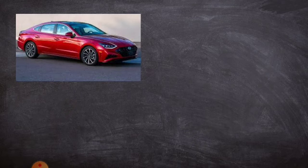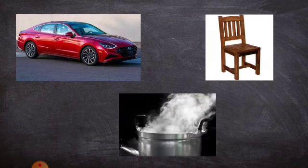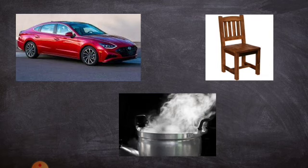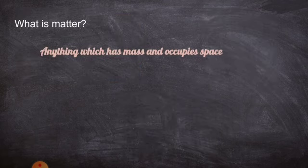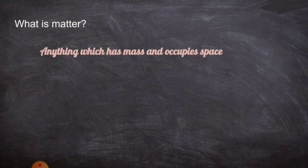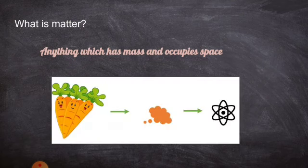Next, we have examples like a car, chair, and steam — these are examples of matter. Everything in the world around us is made up of matter. So what is matter? Anything which has mass and occupies space is said to be matter. Matter is made up of atoms. That's why we call the atom the building block of matter.